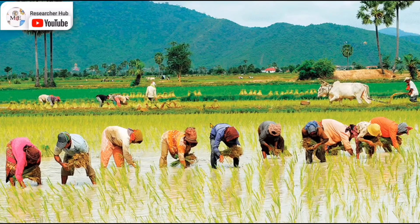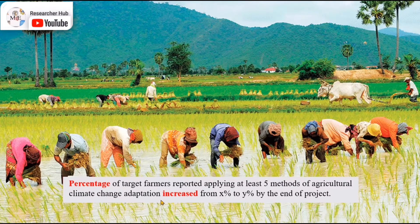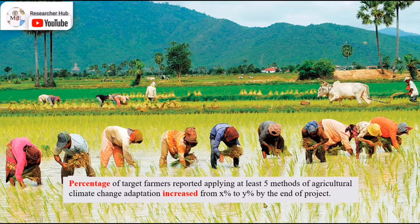So at the outcome and impact level, we are looking for change that happens in practice. Very often this indicator starts with percentage. For example: 'Percentage of target farmers reported applying at least five methods of agricultural climate change adaptation, increased from X percent to Y percent by the end of the project.' So this indicator starts with percentage — this is what we call outcome or impact indicators.